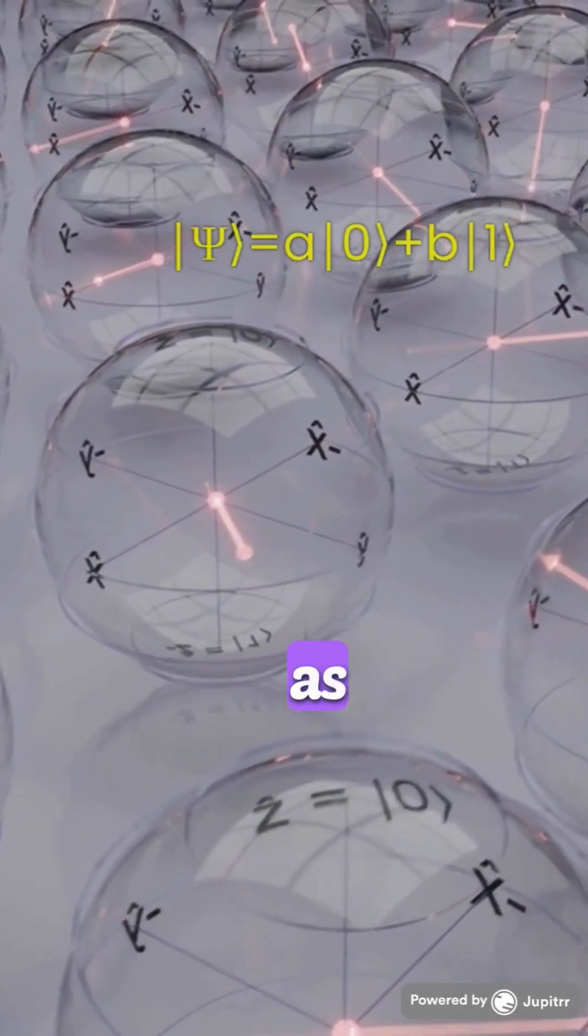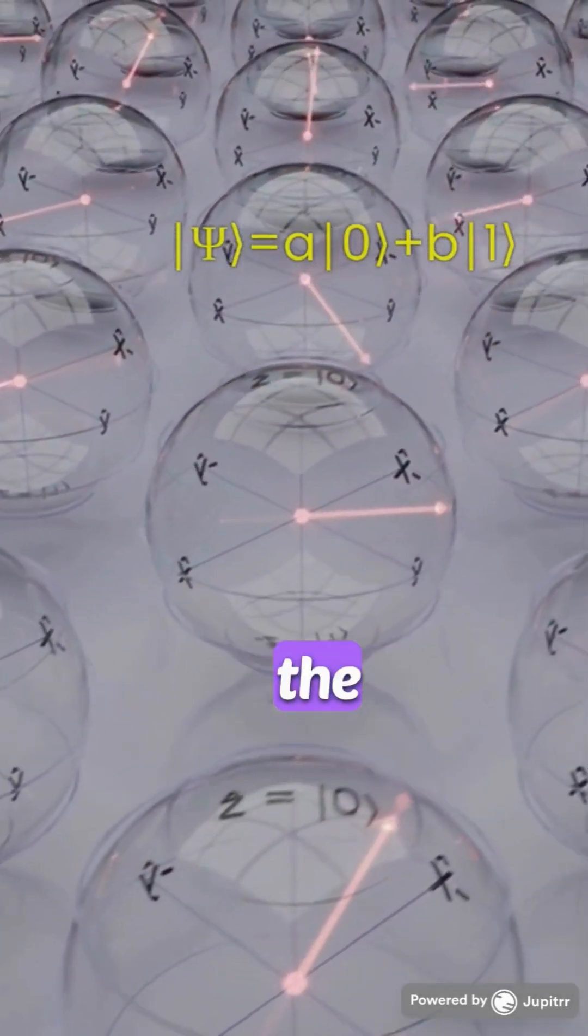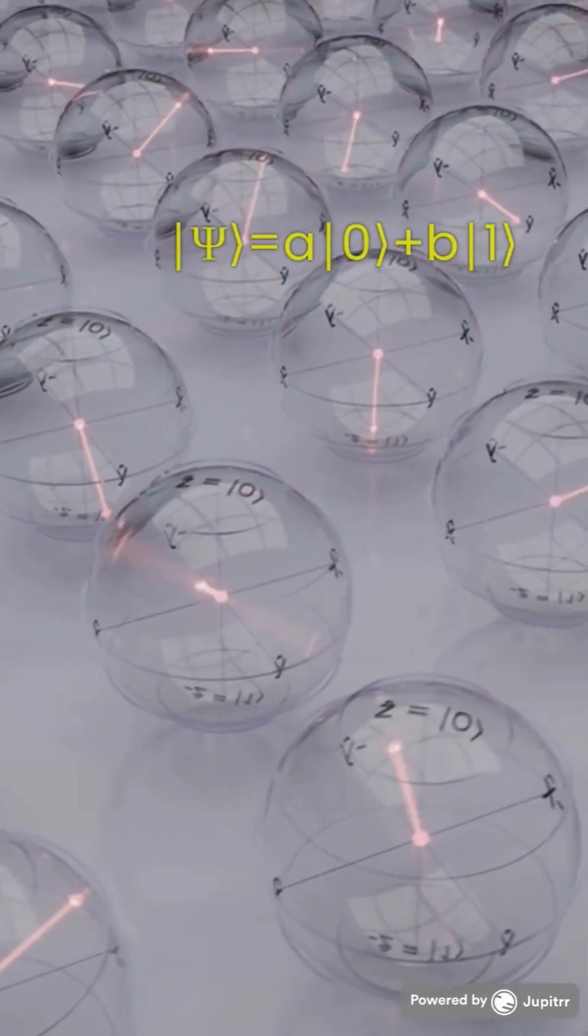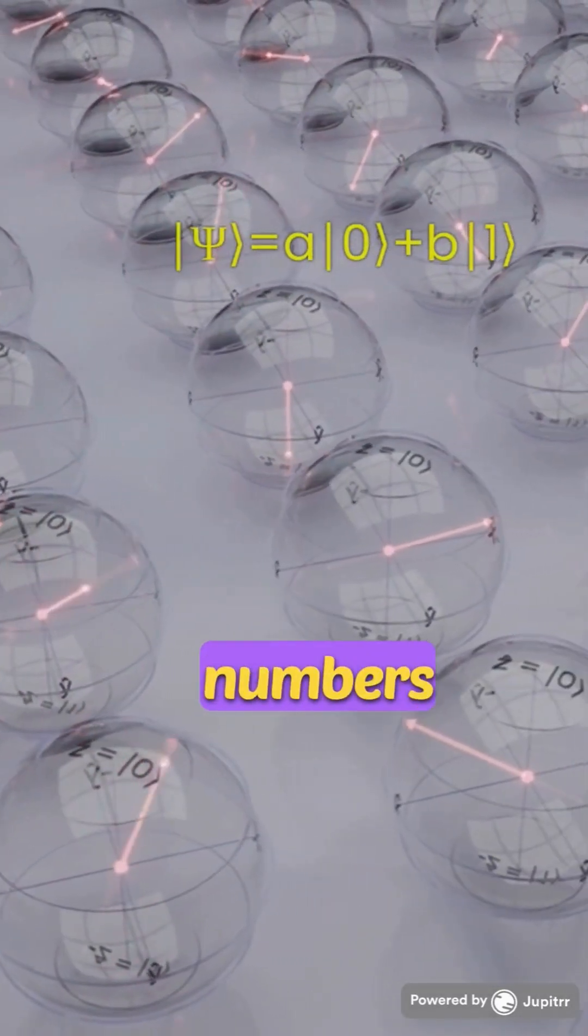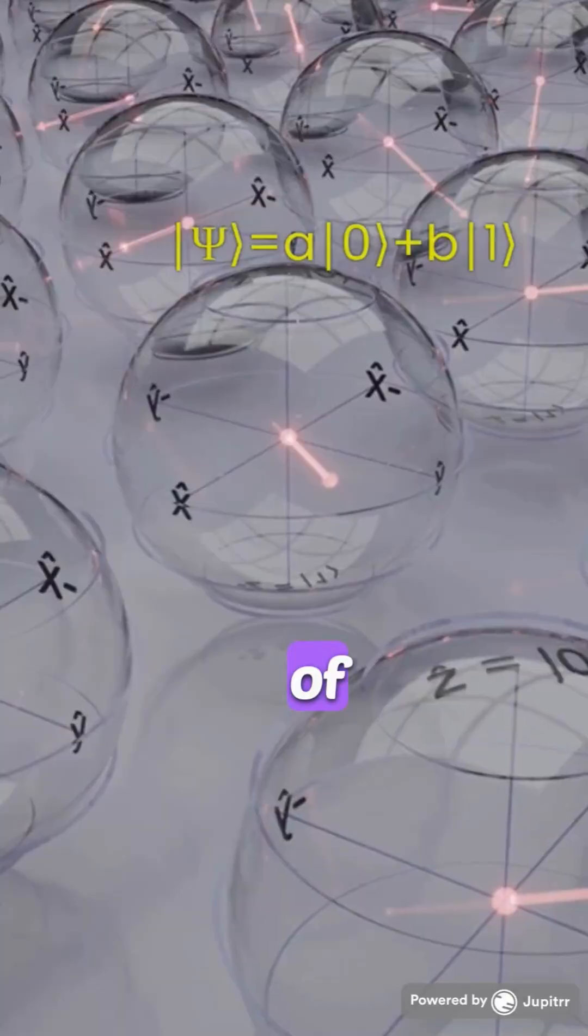The state is represented mathematically as ket psi equals the sum of a ket zero plus b ket one, where a and b are complex numbers that describe the probabilities of measuring each state.